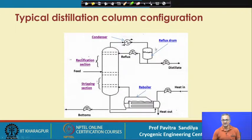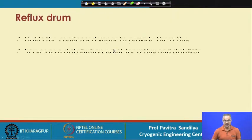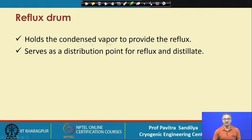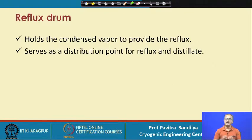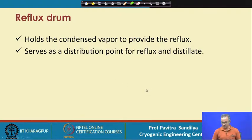We see that there is a reflux drum, which carries the condensed liquid from the condenser. Its job is to hold the condensed vapor to provide the reflux and serve as a distribution point — we keep the condensed vapor in the reflux drum and adjust the amount of reflux to be given to the column, and accordingly the distillate amount will also change.